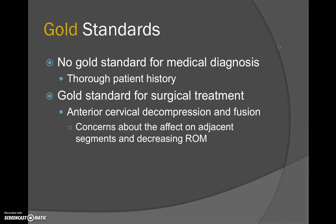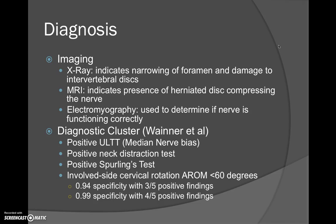Clinicians have reported concerns about anterior cervical decompression and fusion, as it tends to create hypermobility in the adjacent segments and hypomobility overall. Imaging can also support diagnosis: an X-ray will indicate narrowing of the foramen and damage to the intervertebral discs, an MRI will indicate the presence of a herniated disc compressing the nerve, and an EMG can determine if the affected nerve is functioning correctly.